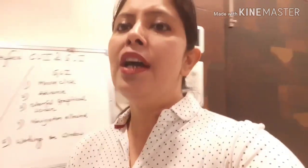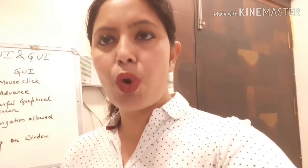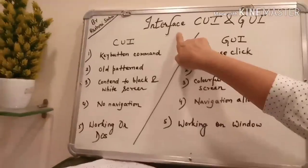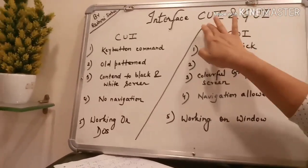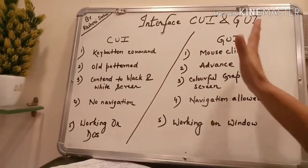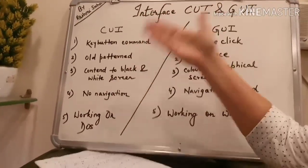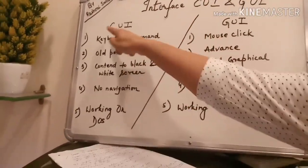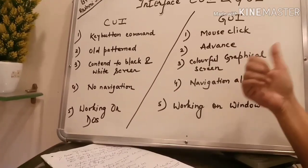Ab humara next topic hai GUI and CUI. Jab MS-DOS, Linux, aur Unix tha, ek interface kaam karta tha jise hum CUI kehte the — Character User Interface. 1980s mein GUI revolution hui, aur MS-DOS, Unix, Linux pe chalane wale CUI interface ki expiry date aa gayi. We now have a new interface which is GUI — Graphical User Interface — started in the 1980s.